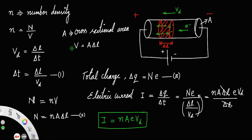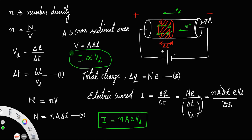Clearly, I is directly proportional to drift velocity. When the drift velocity of the electrons increases, the current also increases.